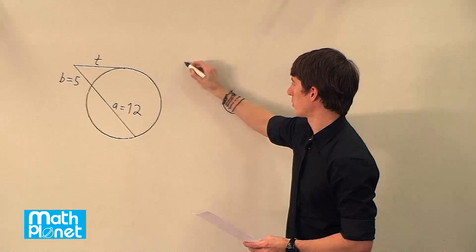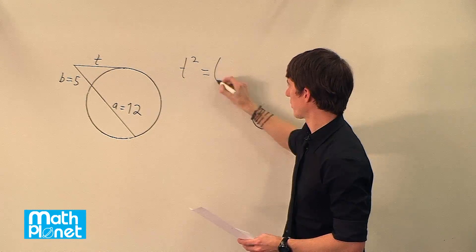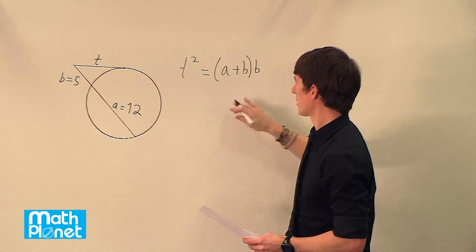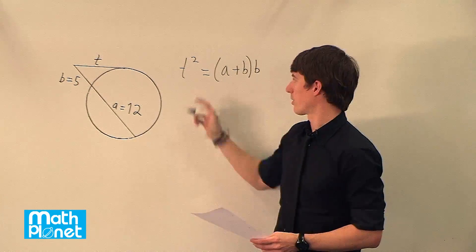So that formula looks like this: t squared equals the sum of a plus b times b. So we can just plug in a and b here and solve for t.